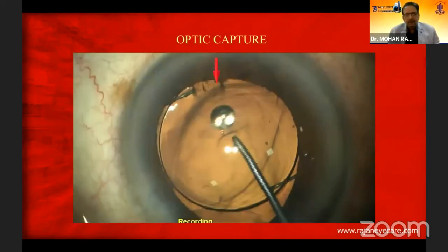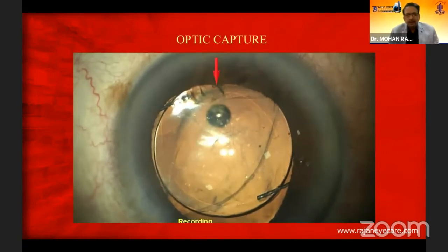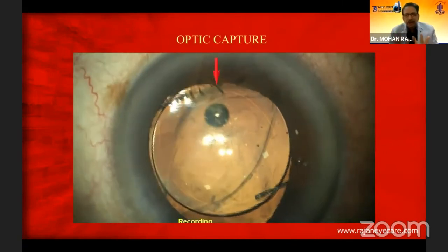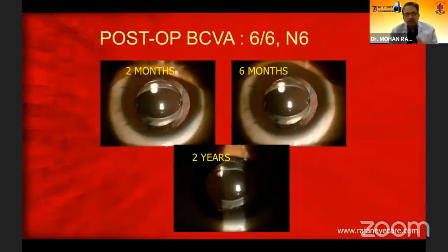The end point is the ovalization of the capsulorrhexis margin, which is very, very important for you to understand. This lens will be stable — it will not move a micron. There is no possibility of UGH syndrome. You can see at two months, six months, two years, how stable these lenses are.